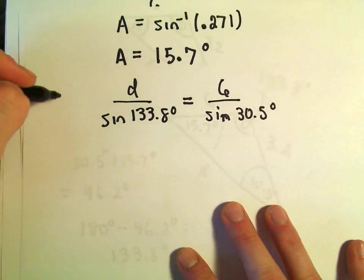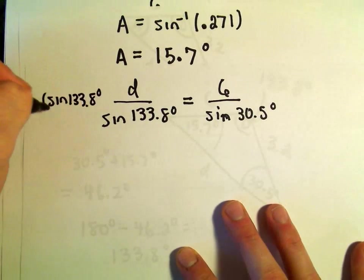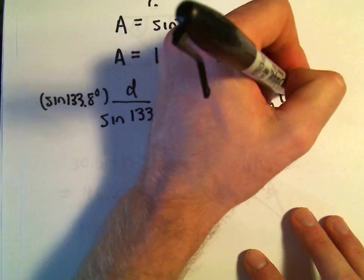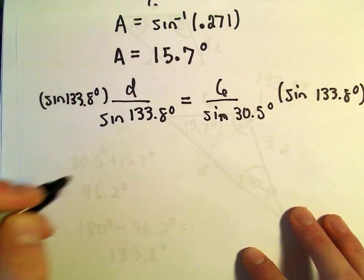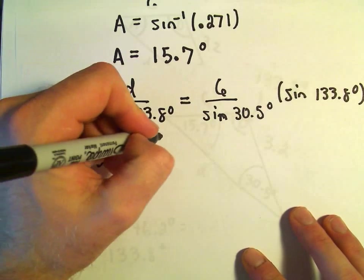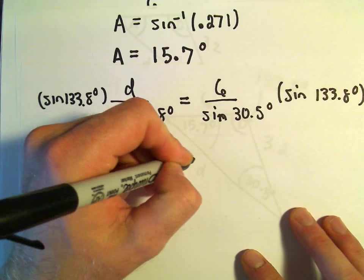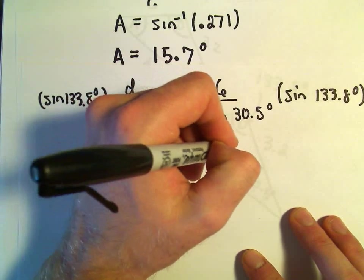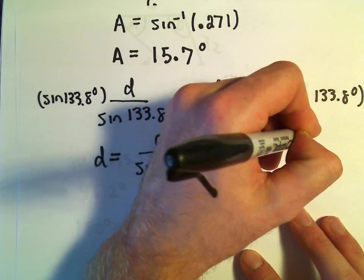So 6 over sine of 30.5 degrees. So all we have to do now is we can multiply both sides by sine of 133.8 degrees. We'll multiply the right side by that as well.